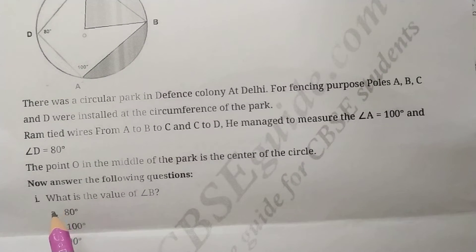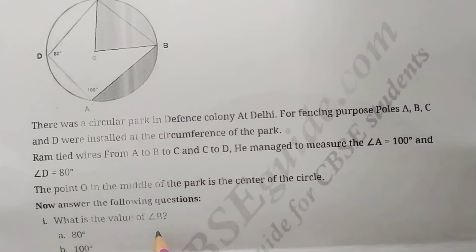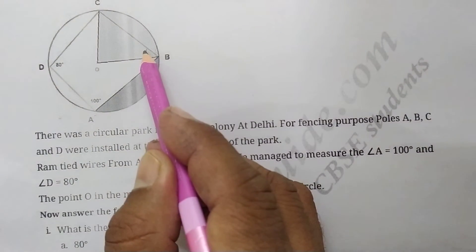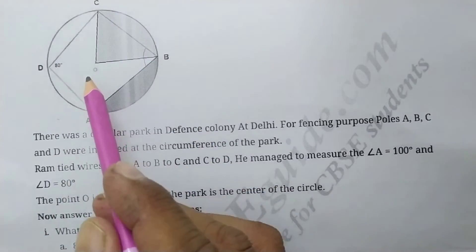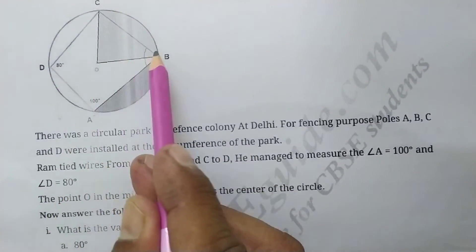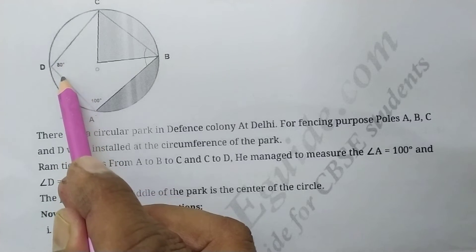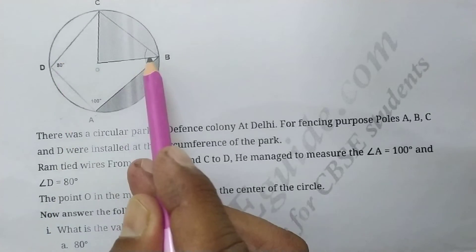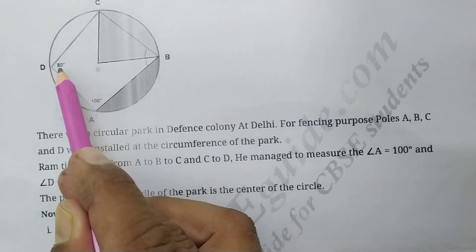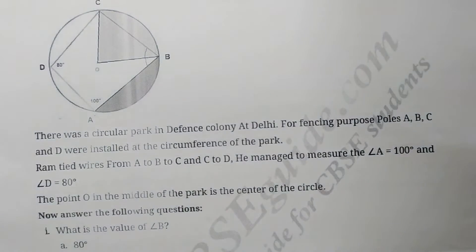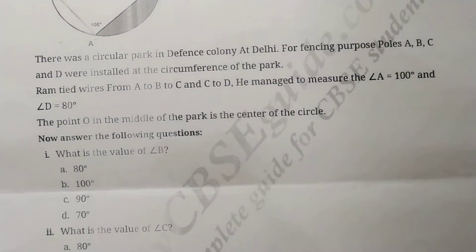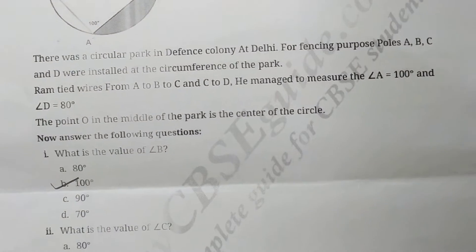First question: what is the value of angle B? Since ABCD is a cyclic quadrilateral, opposite angles sum to 180 degrees. Angle D is 80 degrees, so angle B equals 180 minus 80, which is 100 degrees, because B and D must sum to 180.